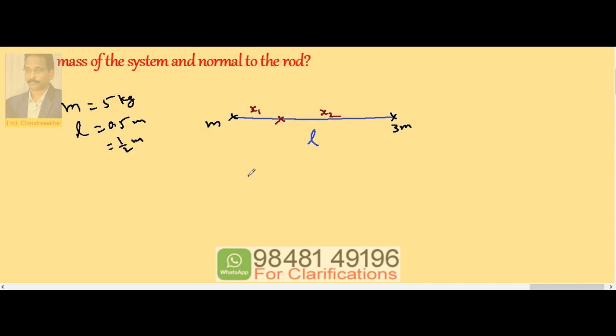So X1, center of mass distance, is given by second mass by total mass into total distance. So M and M gets cancelled. So this is equal to 3/4 L.